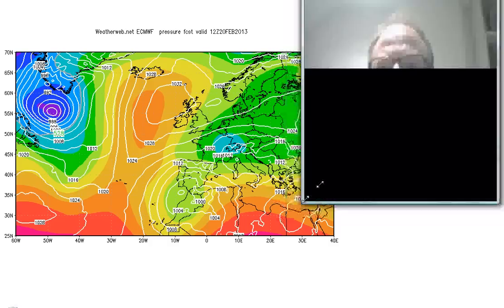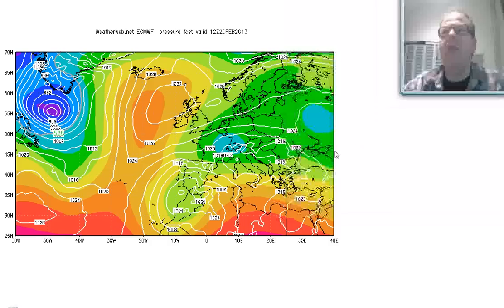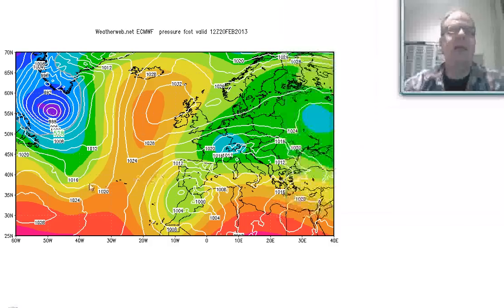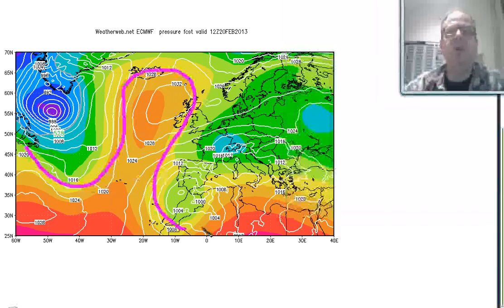I just want to explain a little bit more about ridges. I've been talking about ridges over the last few days and we've got them out in the Atlantic. It's a feature of the weather this winter, and there's one on the chart here — look, it's that feature going through there.